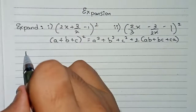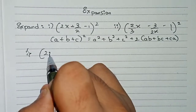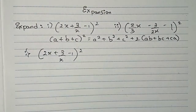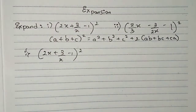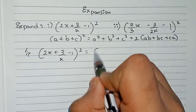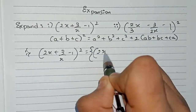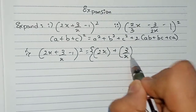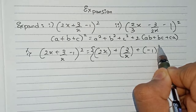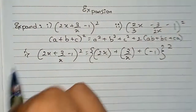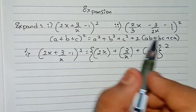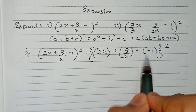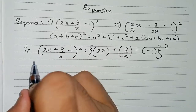Question one says: (2x + 3/x - 1)². First we rewrite minus 1 to make it a plus, so it becomes (2x + 3/x + (-1))². According to the identity (a + b + c)², we identify a = 2x, b = 3/x, and c = -1.